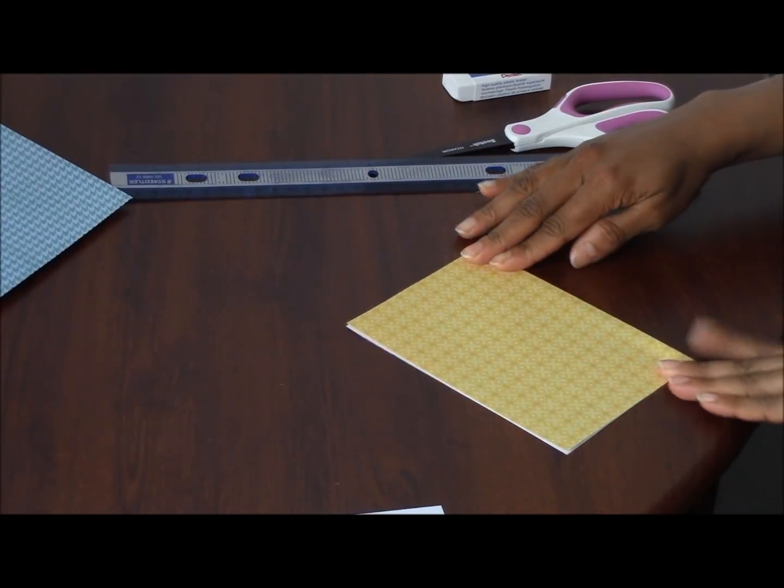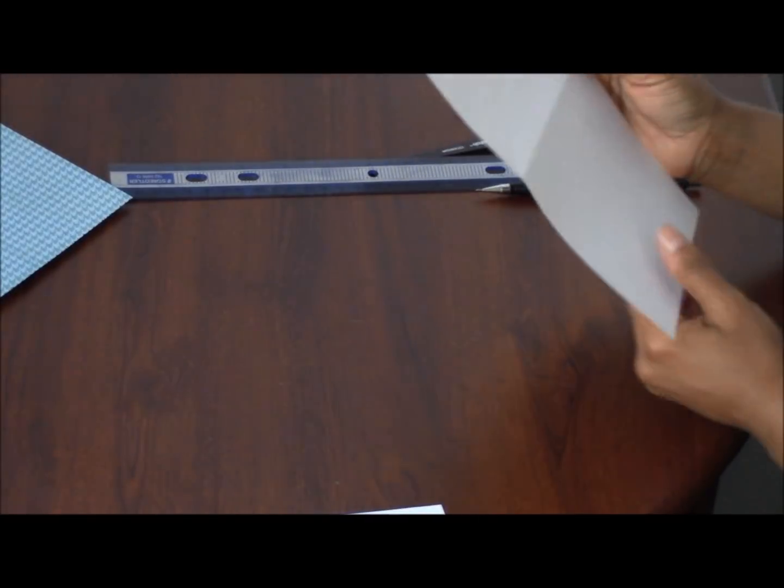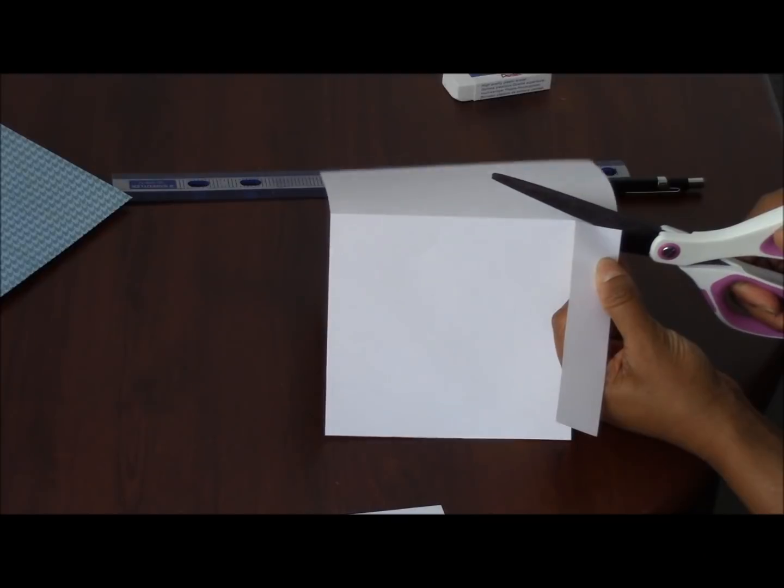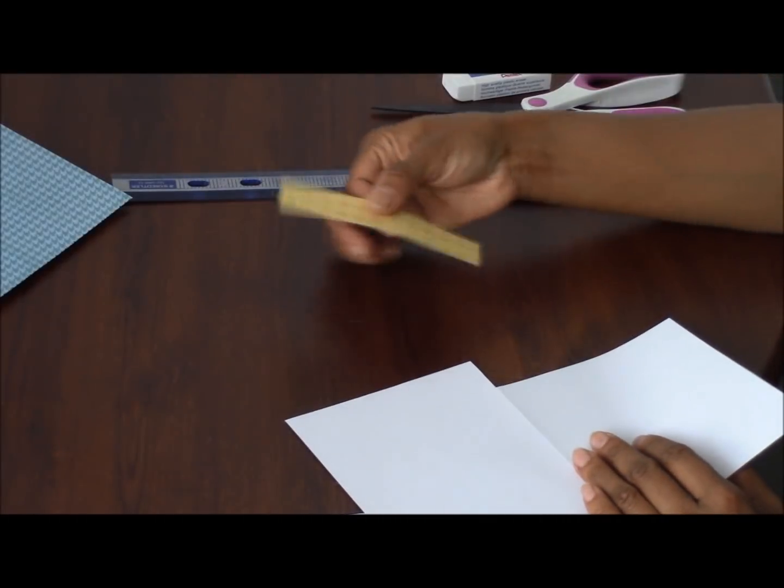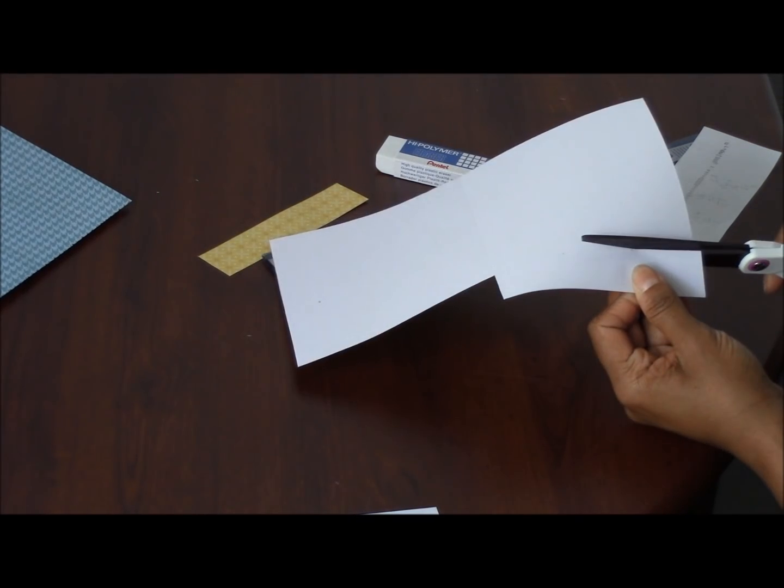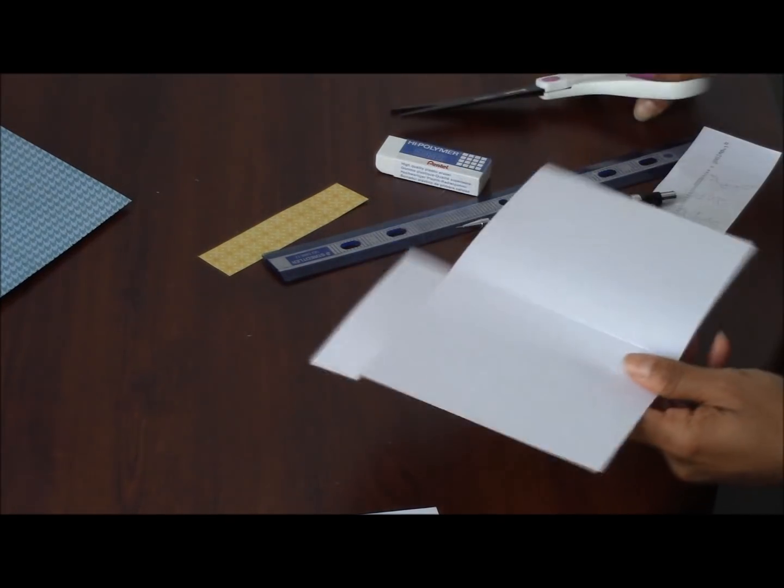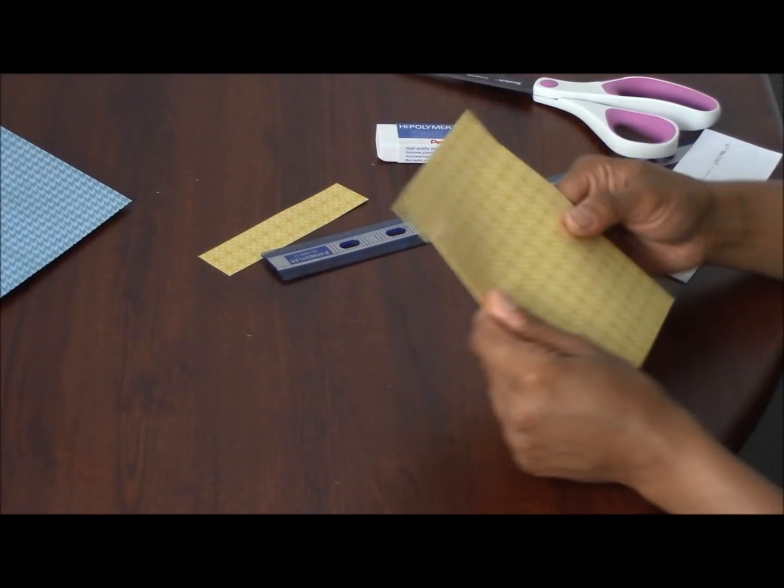Cut off one inch from the side that would be the back of your card. Don't throw this strip, I'll show you why in a bit. Now cut a one inch slit from both edges of the other side or the front side of this card. These slits will become the collar of the shirt.